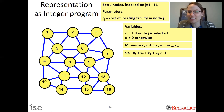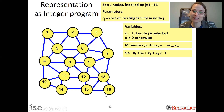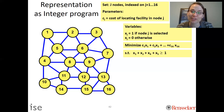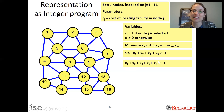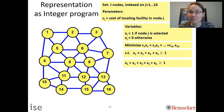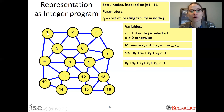If we just had that constraint, neighborhood 1 would be fine but neighborhood 16 would not be covered. That's not the full set covering problem. We need another constraint: we need to build in x_1, x_2, x_3, x_5, or x_6 — at least one of those has to be built in. That constraint enforces that district 2 is covered, because district 2 is only covered if you build in 1, 2, 3, 5, or 6.